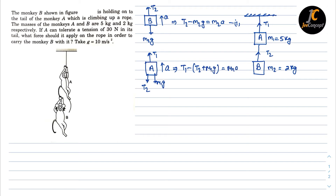There are two scenarios from the given condition. Since A can tolerate a maximum tension of 30 newtons, the maximum value of T2 is 30 newtons — this gives maximum acceleration. Another scenario is when monkey A just starts the motion and acceleration is almost zero. This is case one and case two respectively.